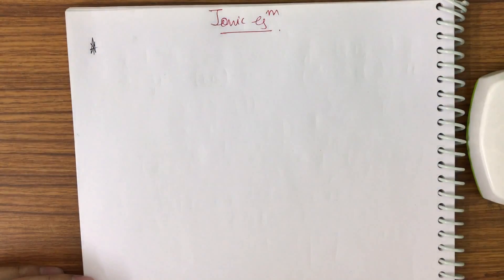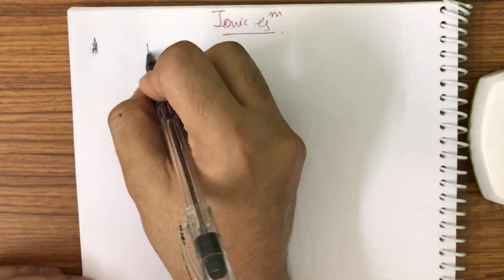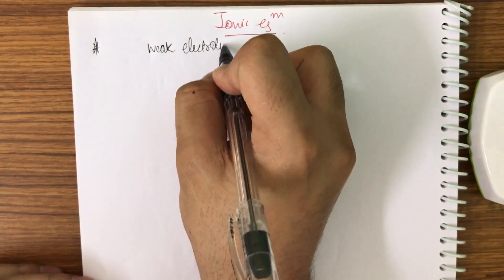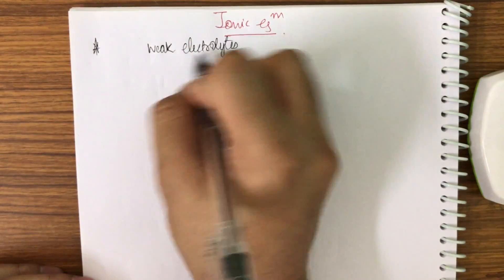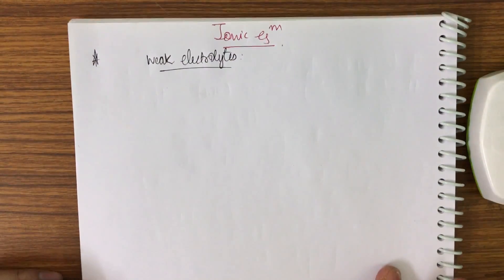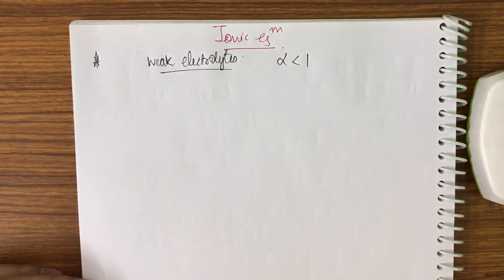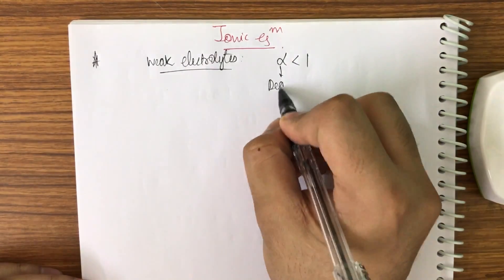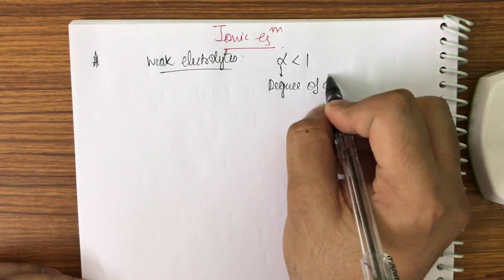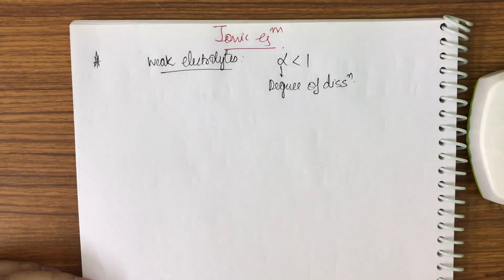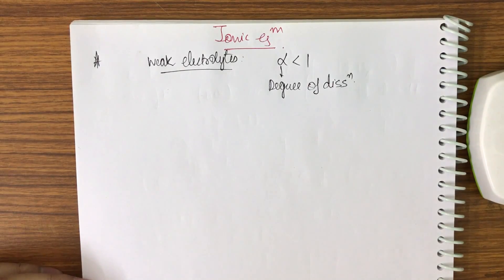In this chapter we shall be dealing with weak electrolytes. Weak electrolytes have alpha less than 1, where alpha is the degree of dissociation. Since alpha is less than 1, it means they are not dissociated completely.